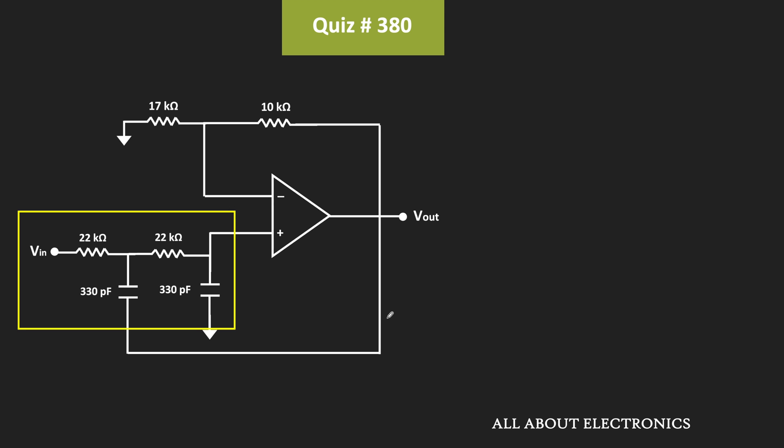Here, through this capacitor, there is feedback from output to the input side, and the output of this filter is applied at the non-inverting terminal of this op-amp. For this configuration,